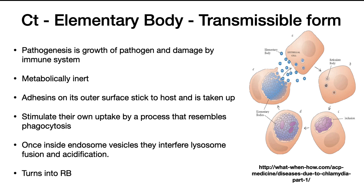There are two types of bodies for chlamydia. There is an elementary body and a reticulate body. The elementary body is the transmissible form — it is metabolically inert and has adhesins on its outer surface that attach to the host cell. It binds to the outside of the cell and is endocytosed in a process similar to phagocytosis. Once inside the endosomal vesicle, chlamydia interferes so that the lysosome does not fuse and there is no acidification. They then convert into a reticulate body.